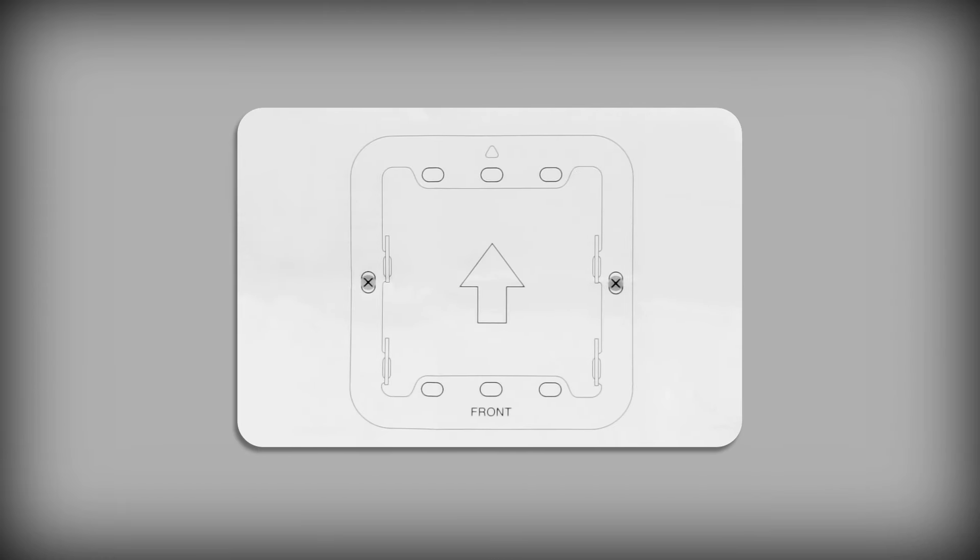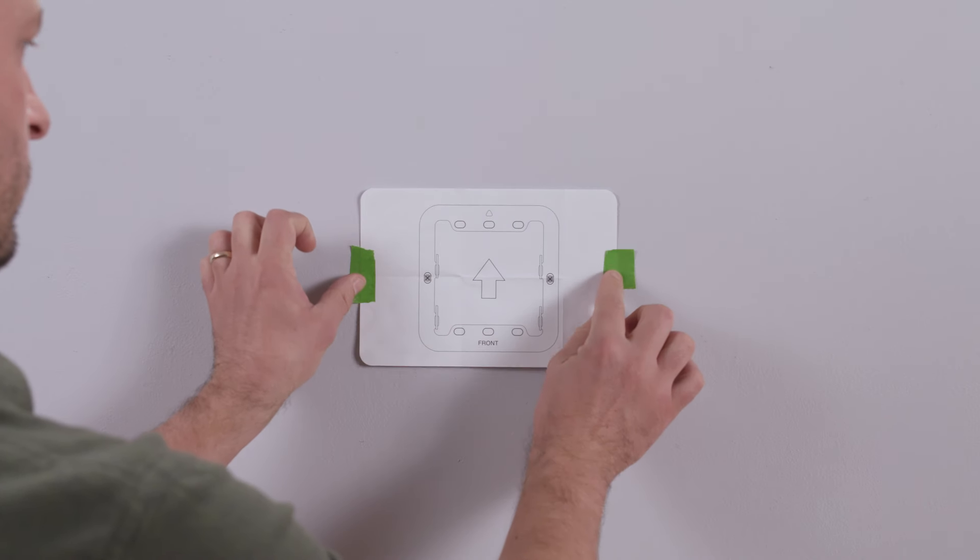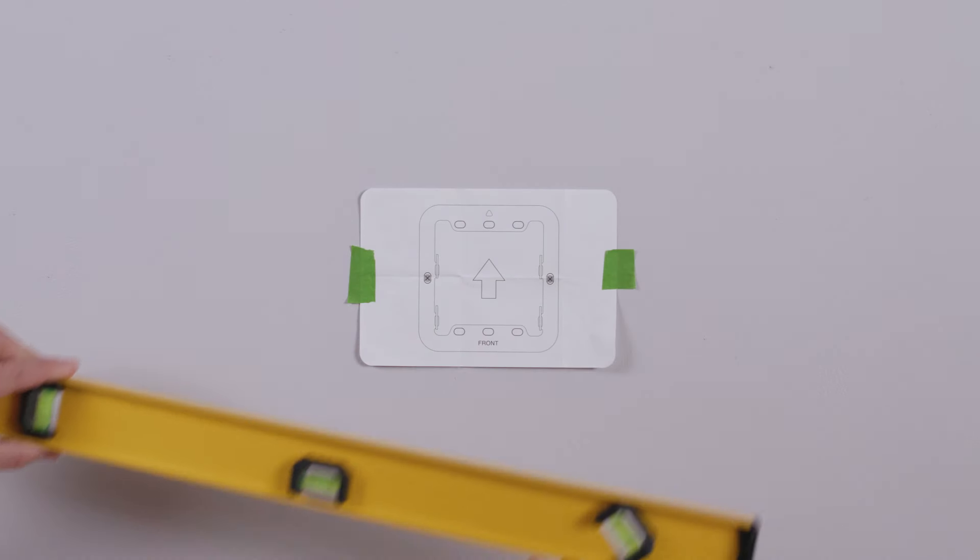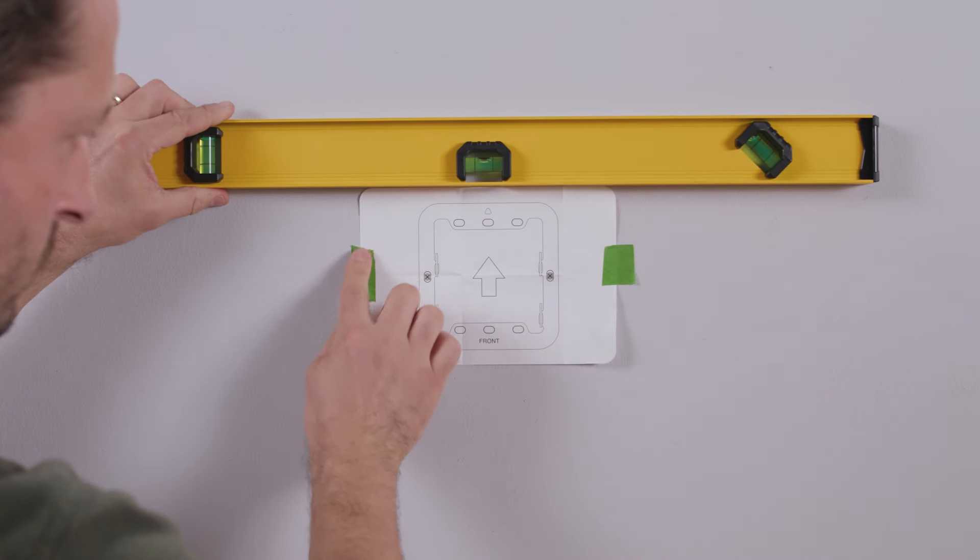To mount your Echo Hub on your wall, use the mounting tips and included mounting template to identify where to mount your device. Place the template on the wall at your chosen height and location. Use a level or level app to level the template, then tape the template in place.